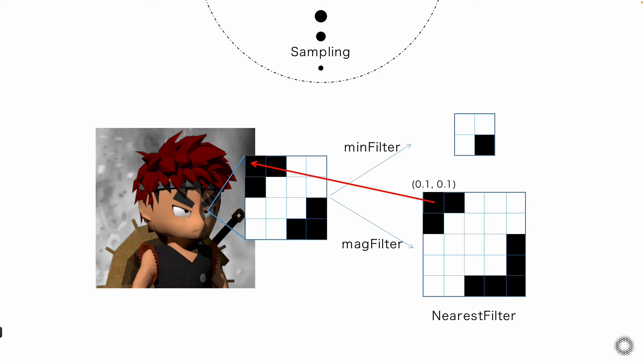So the first filter is nearest filter. This method is very simple. So after scaling each pixel, we will form a new coordinate based on the UV difference. Like the first point will be 0.1, 0.1. Then if we find these corresponding coordinates in the original texture, it will probably be the upper left corner. So we copy this pixel color as the new one.